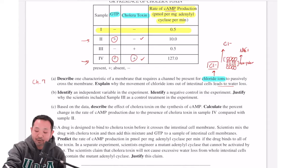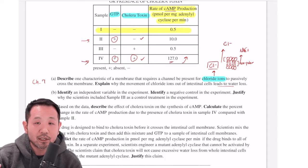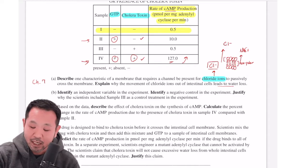I would say that comparing samples 2 and 4, we know that the presence of cholera toxin substantially increases the amount of cyclic AMP production from 10 all the way to 127 picomoles. Remember that it's really good to use data when you're answering these questions.